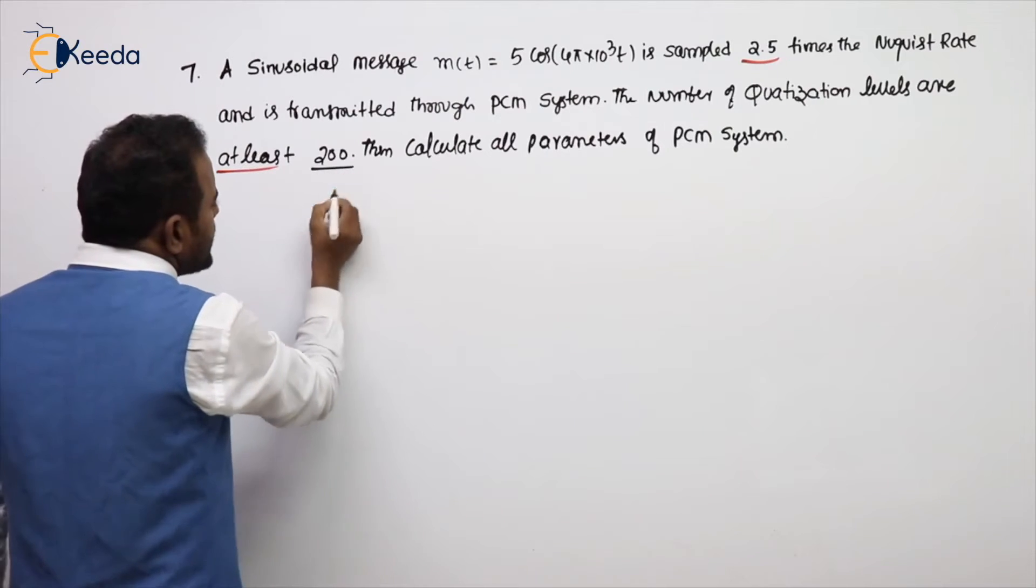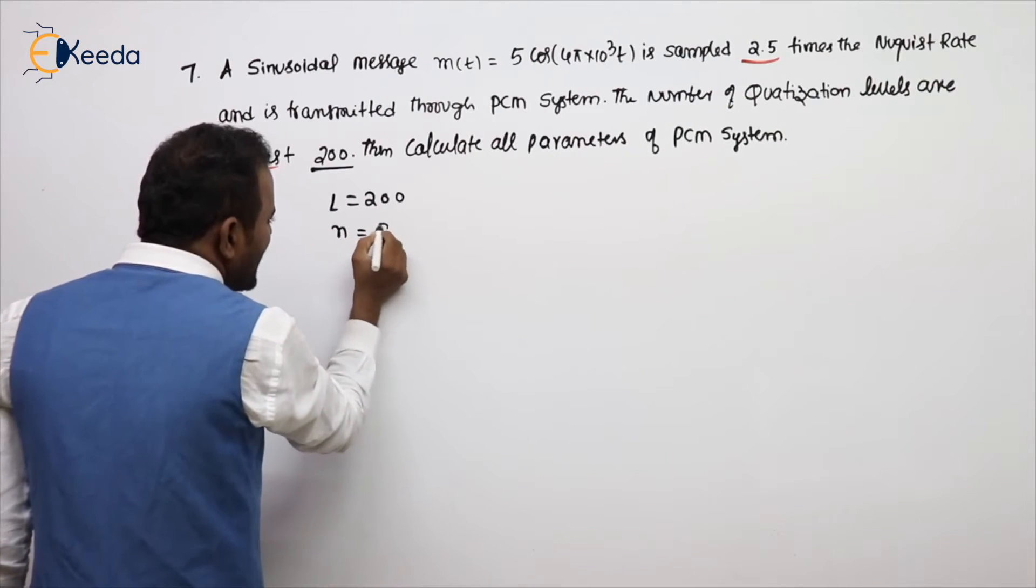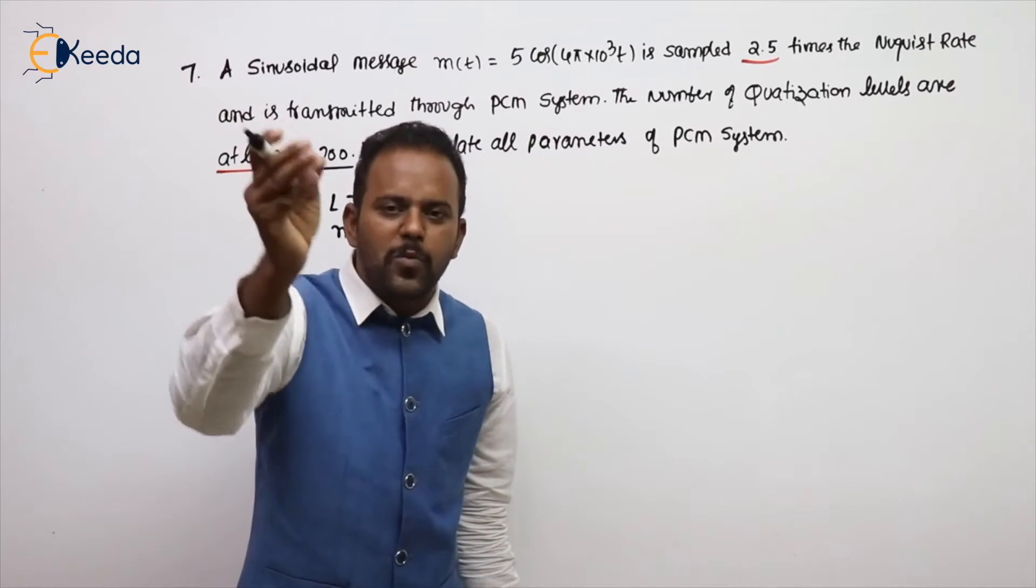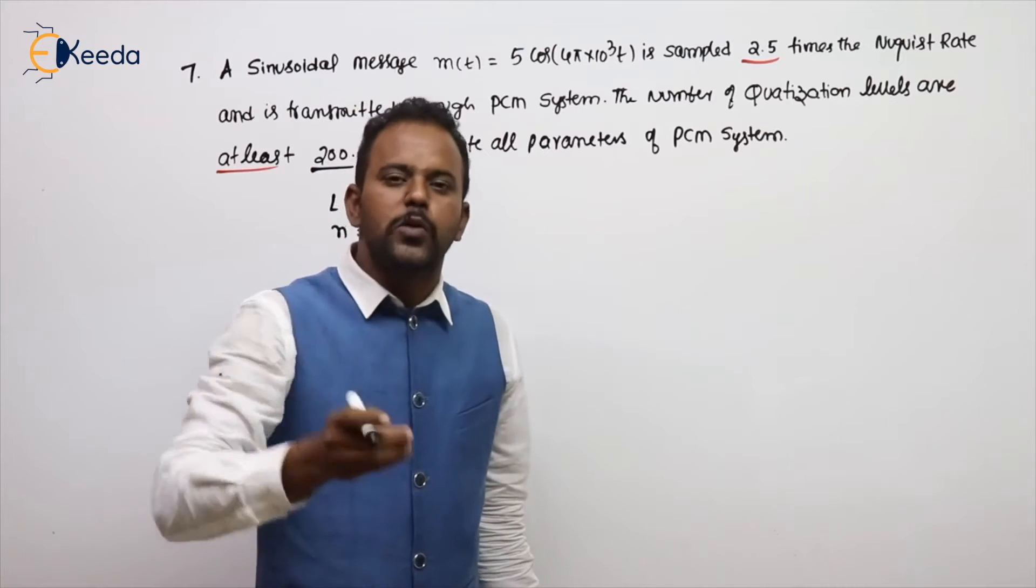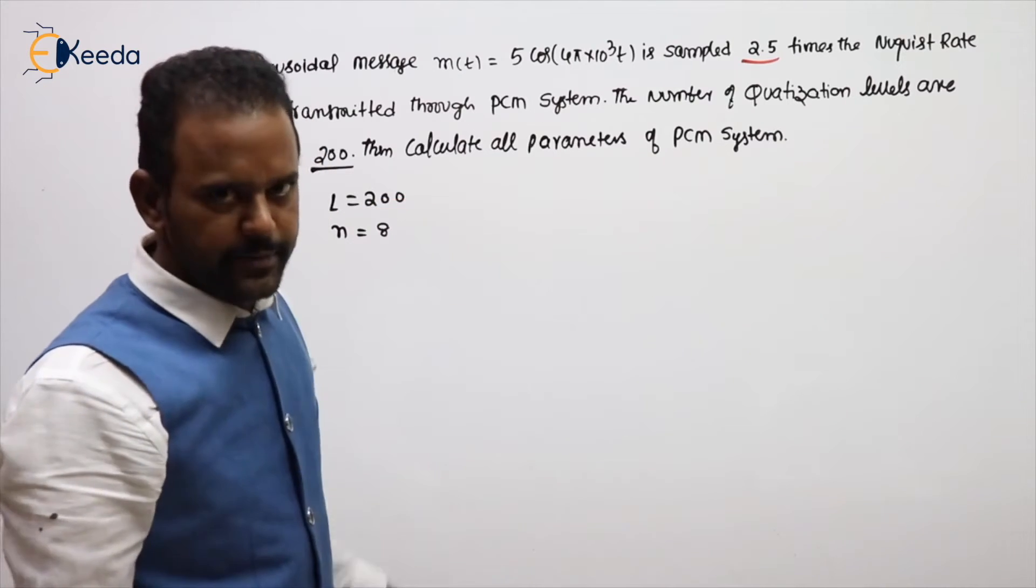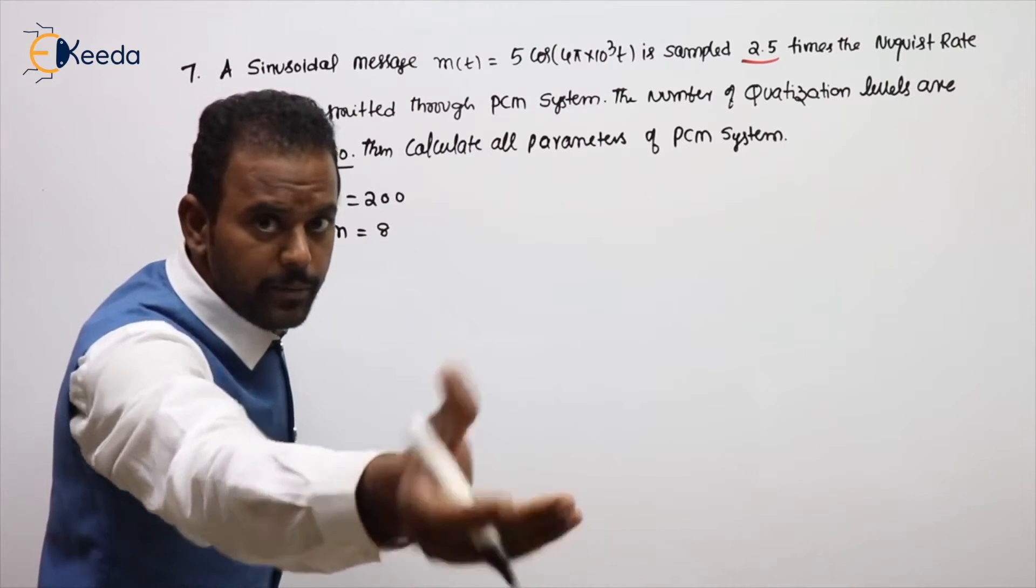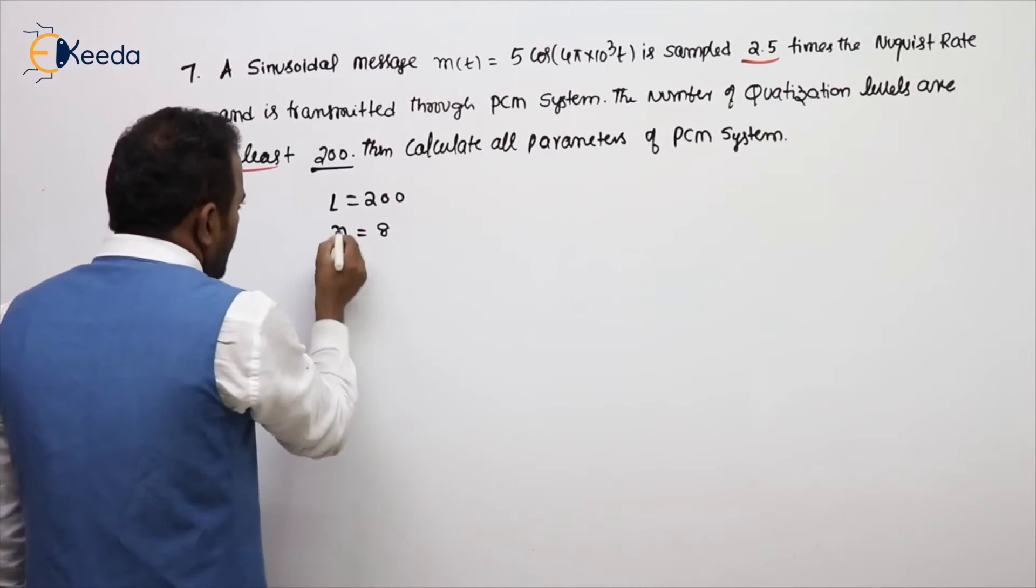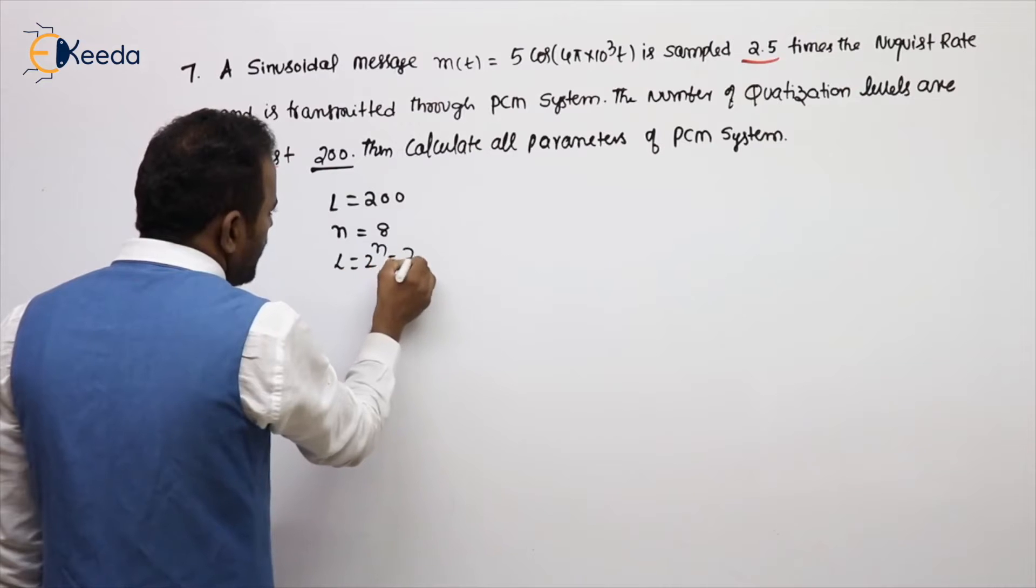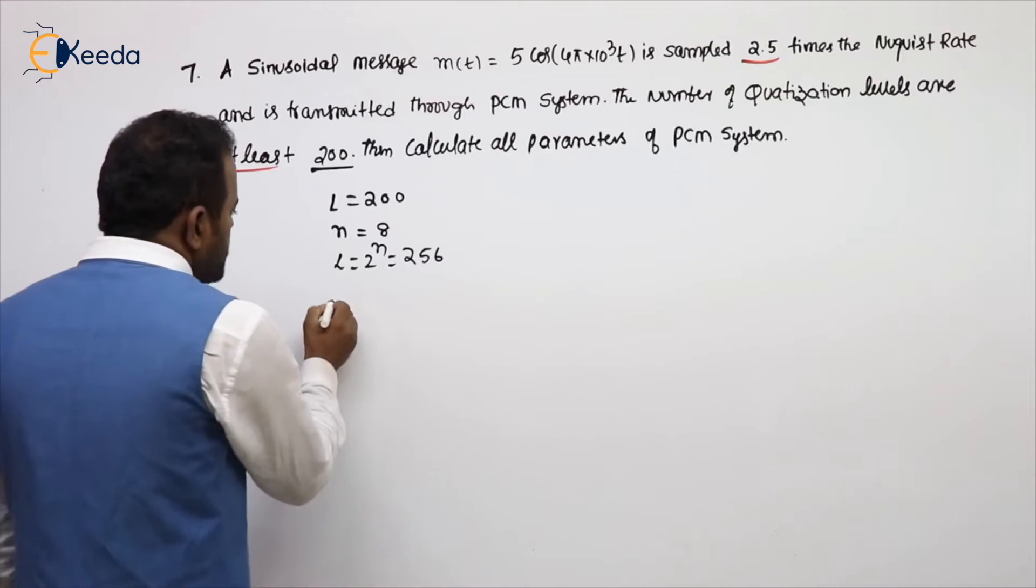Here, at least L value is 200, means N value should be at least 8. Why? Because if I take 7, 2 power 7, 128 only will come. If I take 8, 256 will come. At least 200 means, so in 256 you can also take 200. At least means minimum, at most means maximum. L already known. If I take N equal to 8, then L will be 2 power N, 256 of 2 possibilities there. At least 200 is given.